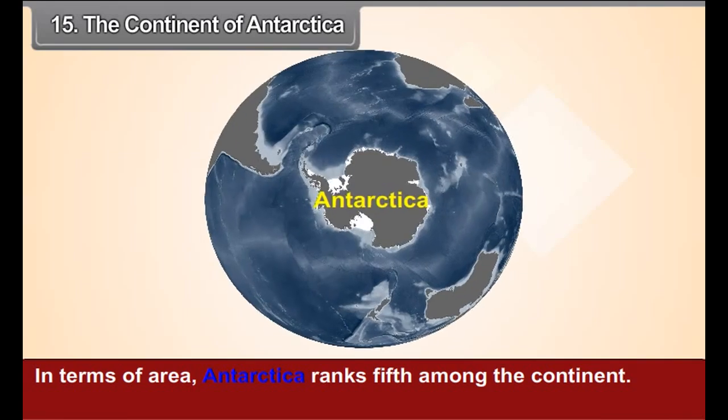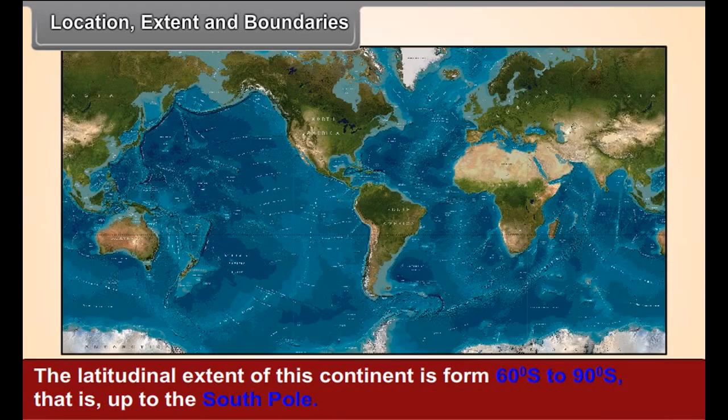In terms of area, Antarctica ranks fifth among the continents. The latitudinal extent of this continent is from 60 degree south to 90 degree south, i.e. up to the South Pole. See figure 15.1 and name the two continents that have land masses close to the continent of Antarctica.